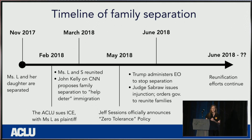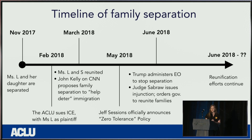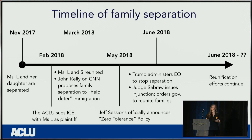In response to that, on June 20th, Trump finally administered an executive order to stop the separation, but this executive order didn't have anything to do with the more than 2,000 children who were already separated. And so the judge in the Ms. L case issued an injunction and ordered the government to reunite the families. Those efforts are still continuing today. Most of the families have either been reunified or their wishes have been gathered and understood, but this has been a really long and arduous process.